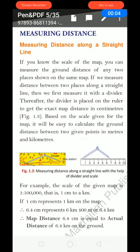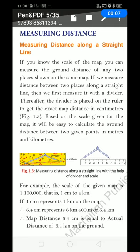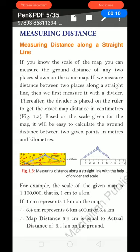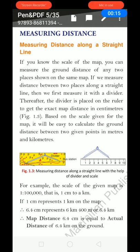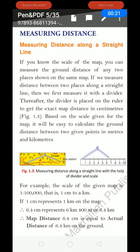Measuring Distance means to measure the distance. Measuring distance along a straight line — if you know the scale of the map, you can measure the ground distance of any two places shown on the map. If you measure the difference between two places along a straight line, we first measure it with the help of a divider. Now, the question raised: what is a divider?